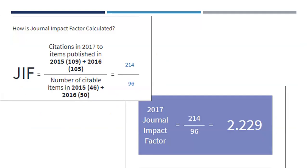The JIF is calculated as: the number of citations received in one year to content published in the journal during the previous two years, divided by the total number of articles or reviews published in those two years. For example, citations in 2017 to articles from 2015 and 2016, divided by total citable items from 2015 and 2016 — that gives you the JIF.